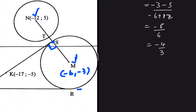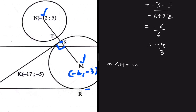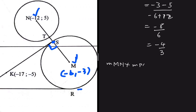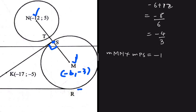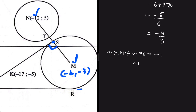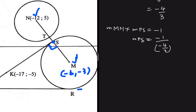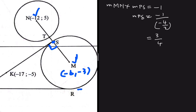Because MS and PS are perpendicular, gradient of MS × gradient of PS = −1. So gradient of PS = −1 ÷ (−4/3) = 3/4. The equation of PS is therefore y = (3/4)x + c, and we just need to find c.